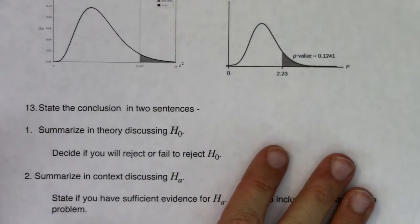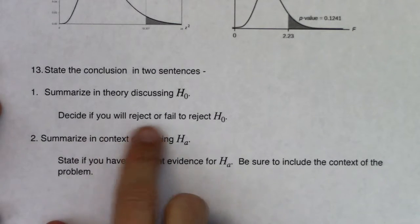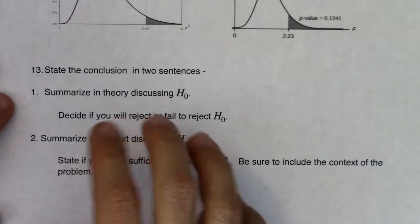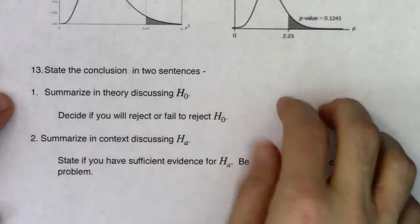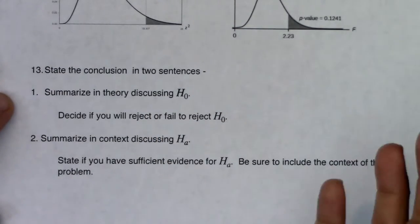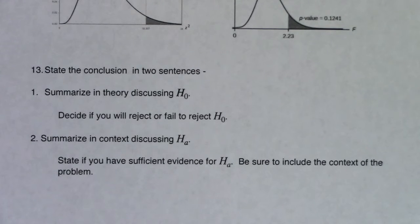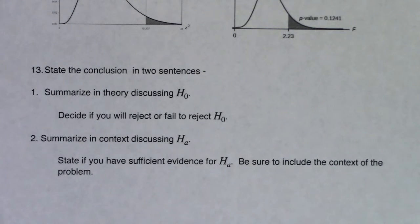Last but not least, step 13: state your conclusion in two sentences. Tell me if you're going to reject or fail to reject H0, and state directly that your p-value is less than alpha or greater than alpha as the reason for your decision. Then based on that decision, you will either have sufficient evidence for the alternate or not. Make sure you include context — don't just say we have sufficient evidence for the alternate; tell me what the alternate is. That's your basic rundown of the 13 steps. We'll work on what a p-value means in just a moment, and then we'll wrap up this chapter.